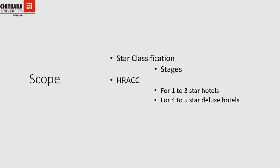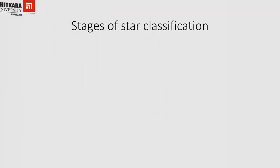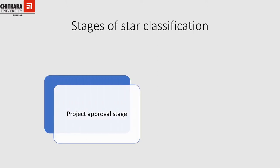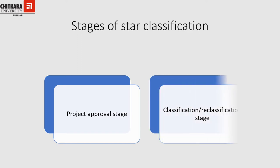The committee that approves the hotels for star categories operates under two subsections: one for one to three star hotels, and one for four to five star deluxe hotels. There are two stages of star classification: the first is the project approval stage, and the second is the classification or reclassification stage.